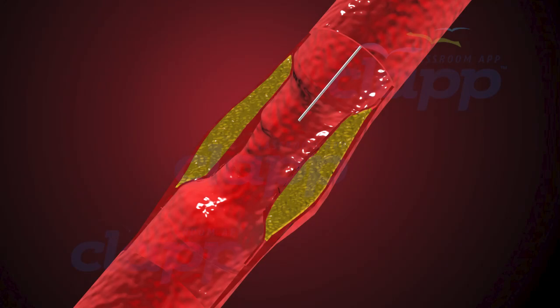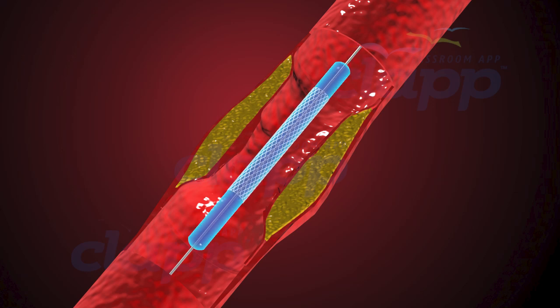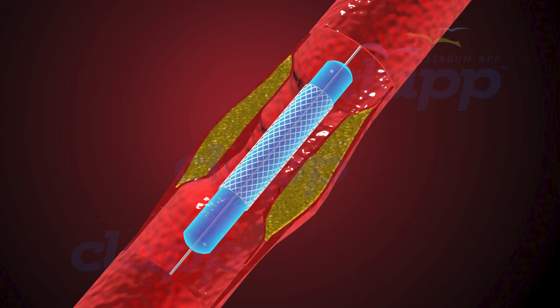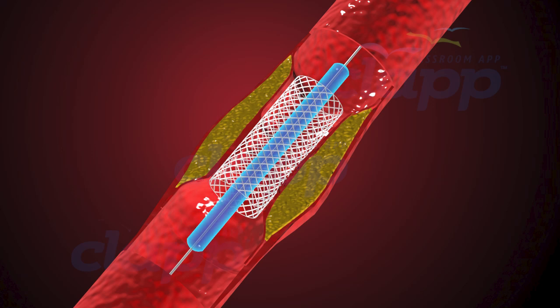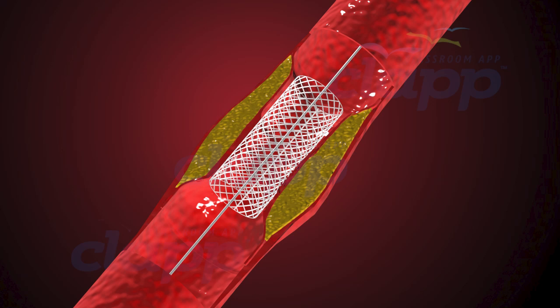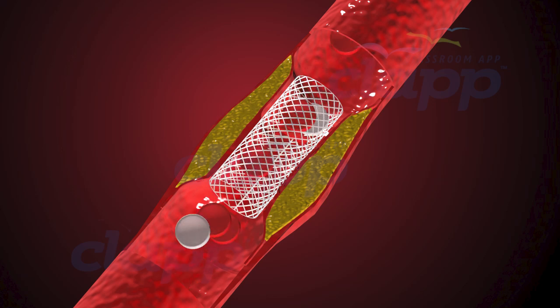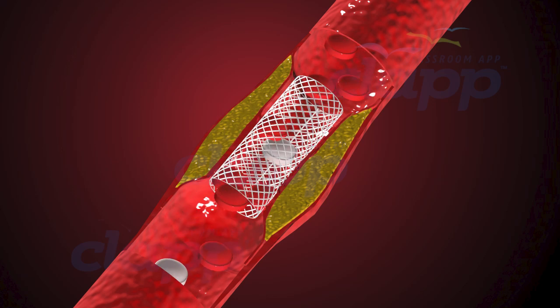After compressing the plaque against the artery walls using the balloon catheter, the stent is introduced with the help of a stent catheter and placed in the affected position. This tiny mesh tube is expanded within the vessel, acting as a scaffold to prevent re-narrowing and maintain proper blood flow. Medicines applied on the stent will prevent re-accumulation of plaque in that area.